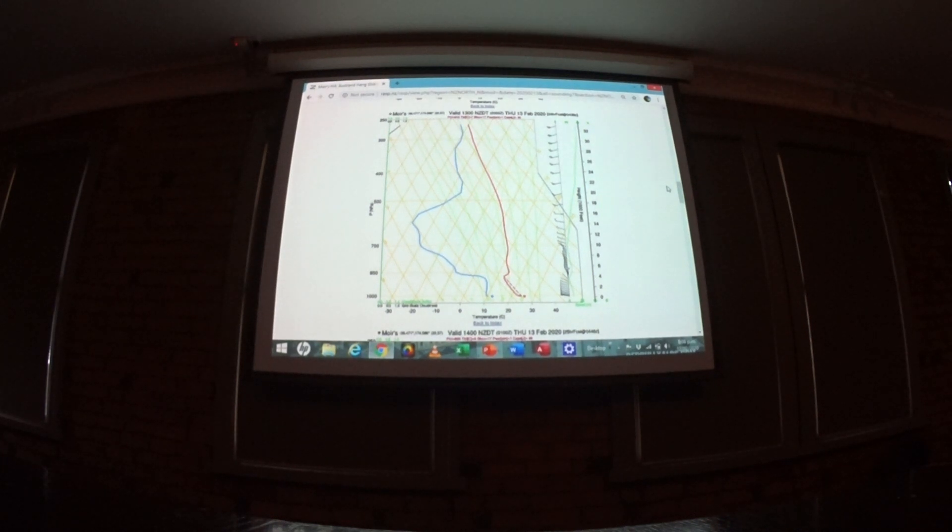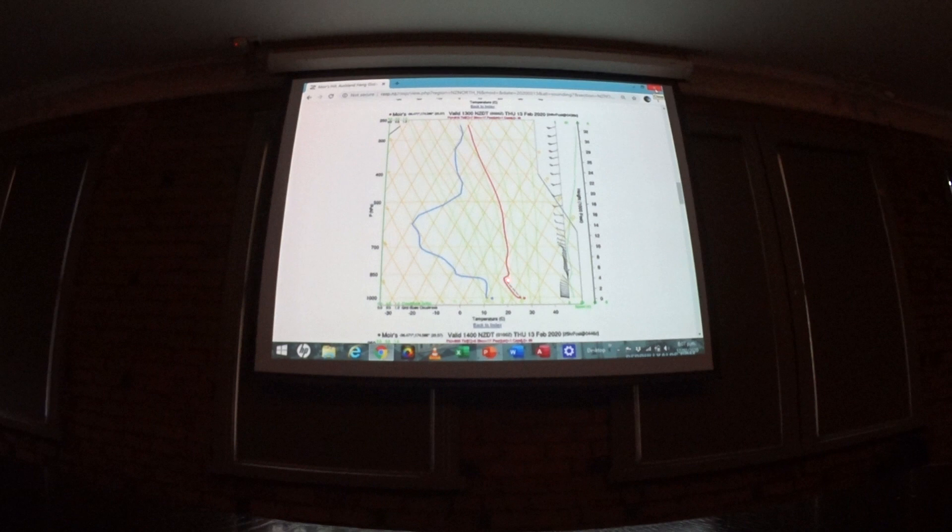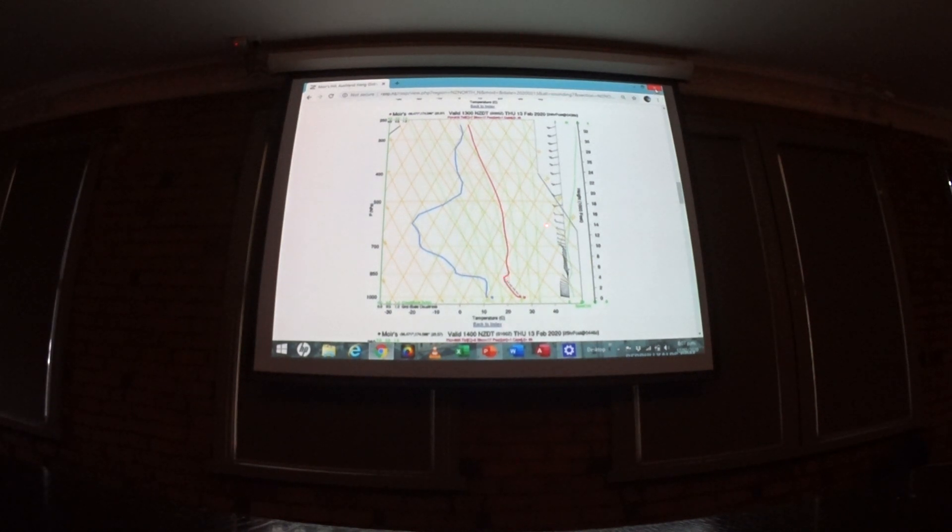The amount of area in between this dotted line and this temperature line - the more area in there, the better the thermals are going to be. If that dotted line is really close to the red temperature line, you're probably going to have weak thermals.